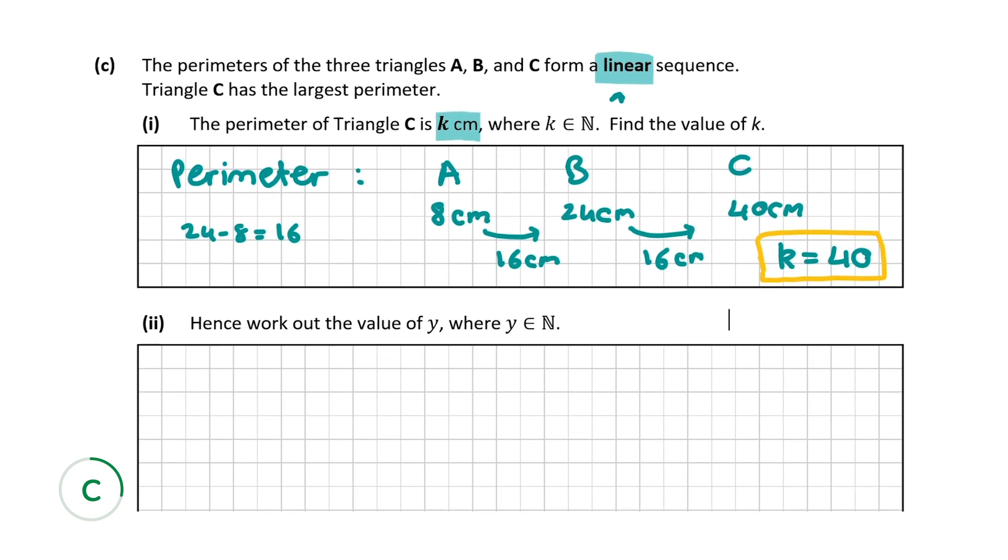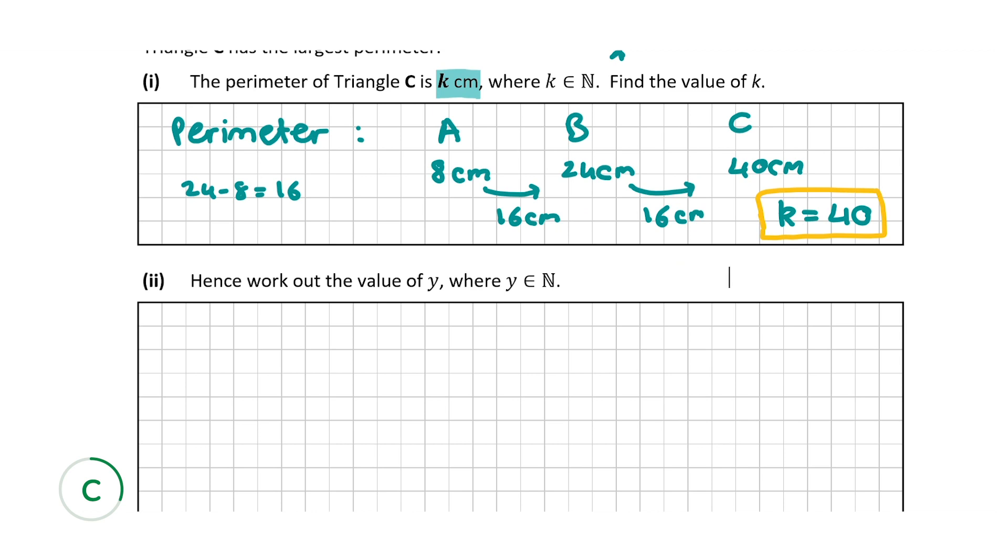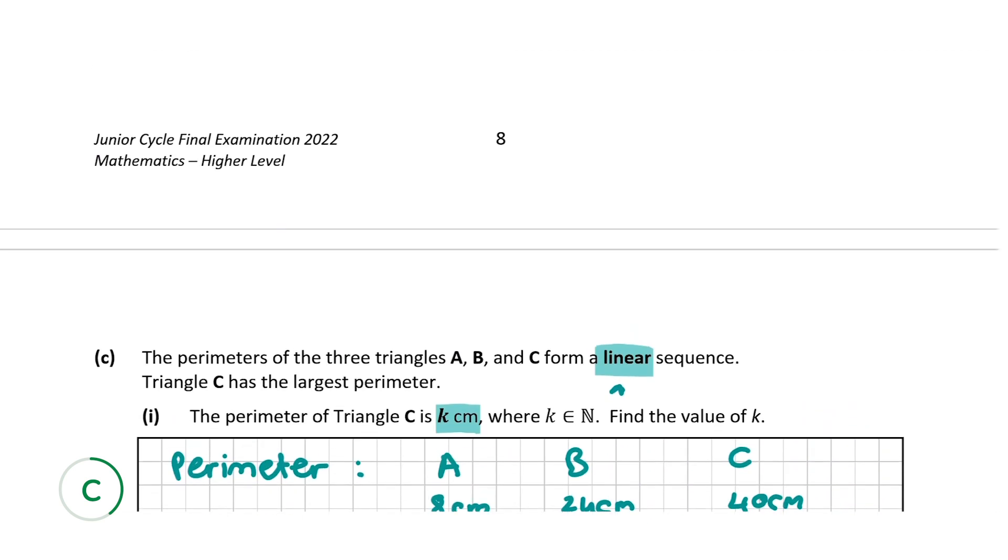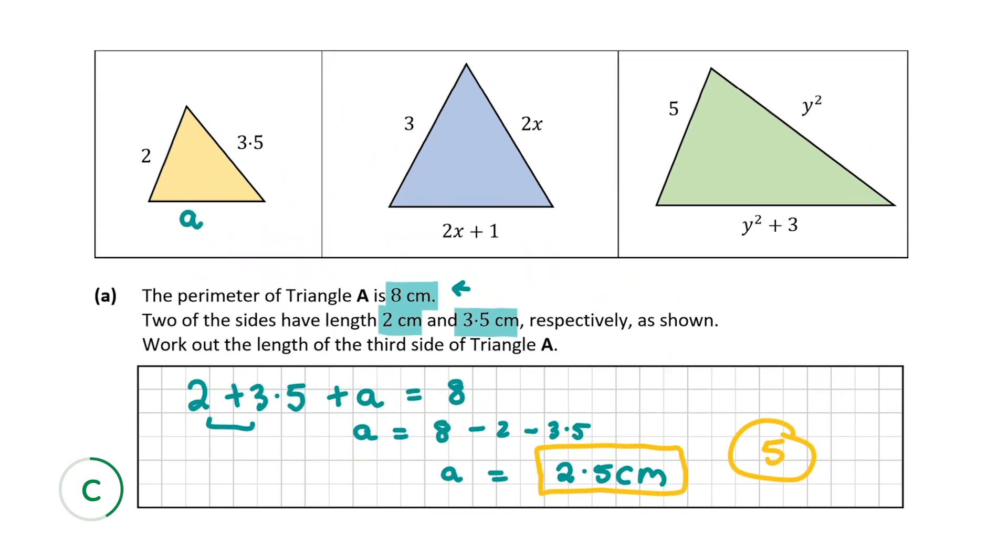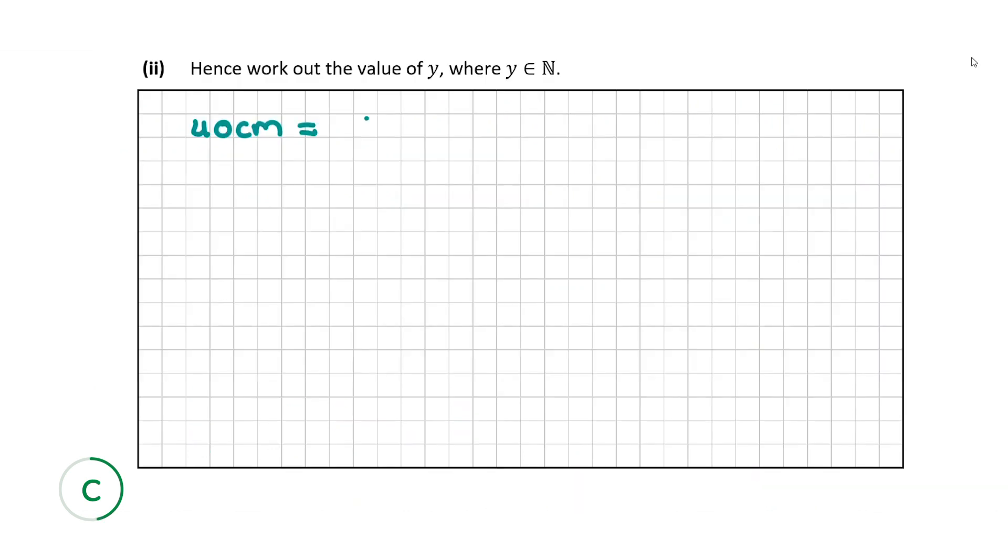Now we're asked in the final part of this question, question C part 2, hence that means using the information that we've just found, work out the value of Y where Y is a natural number. So the perimeter of C is 40 centimeters. But that's equal to when we add the three sides of C. And when we add the three sides of C, we're going to have 5 plus Y squared plus Y squared plus 3. So let's write this down.